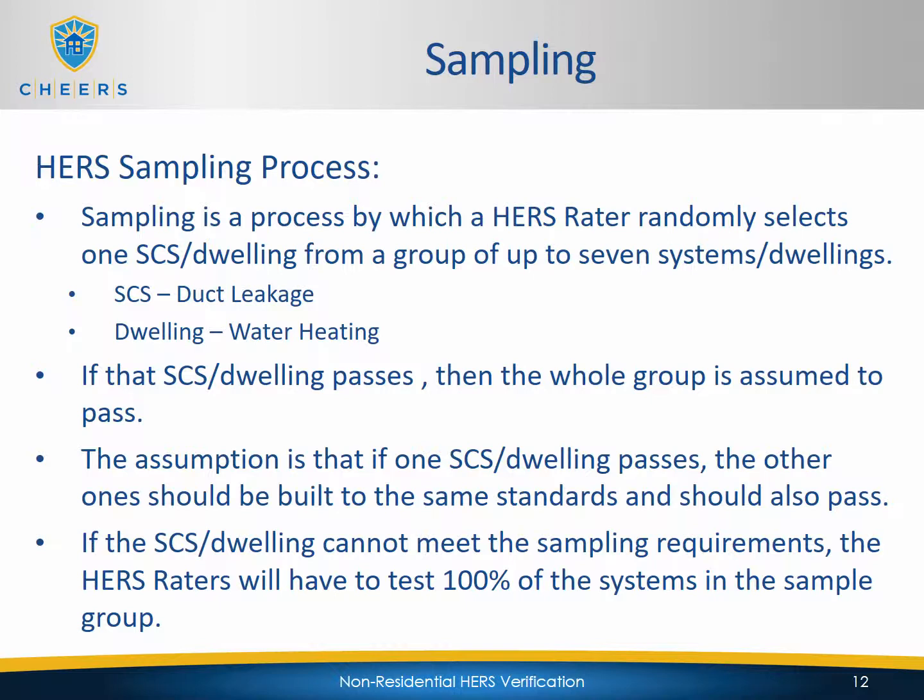The sampling process is similar to the residential side. Sampling is a process by which a HERS rater randomly selects one space conditioning system or dwelling from a group of up to seven systems or dwellings — SCS for duct leakage, dwelling for water heating. If that system or dwelling passes, the whole group is assumed to pass. If the selected SCS or dwelling cannot meet the sampling requirements, the HERS rater will have to test 100% of the systems in that sample group.